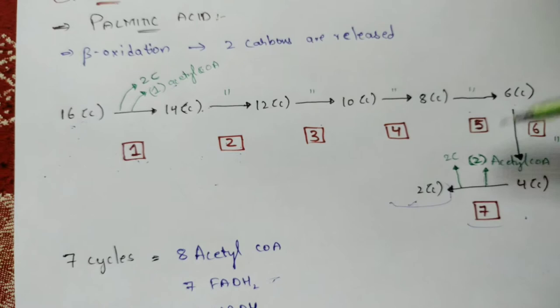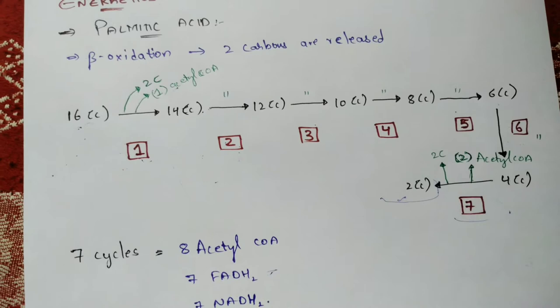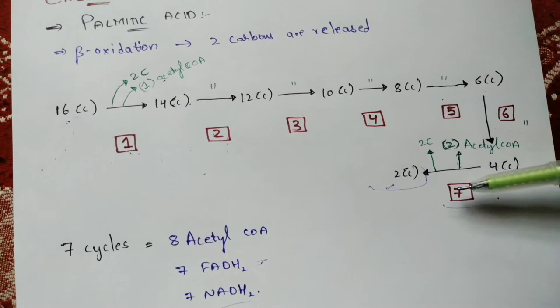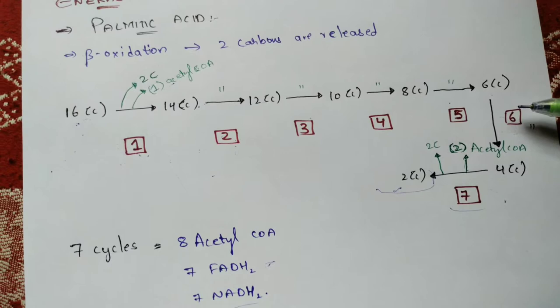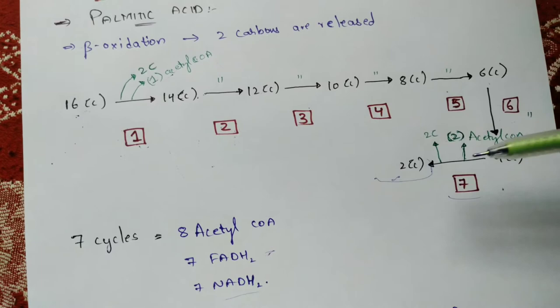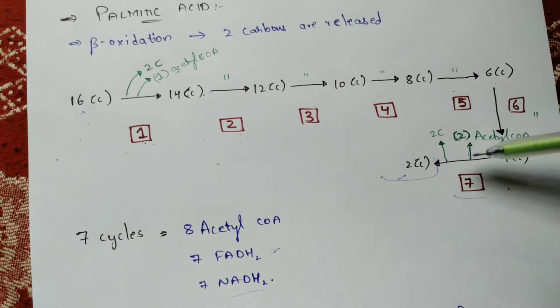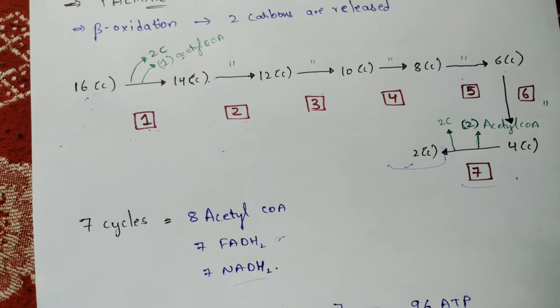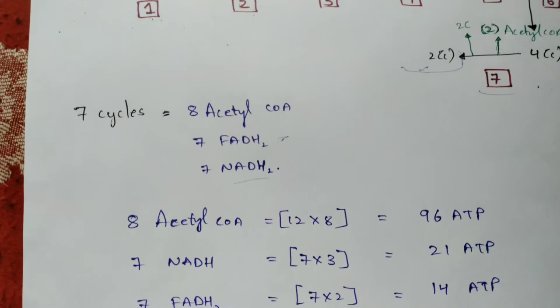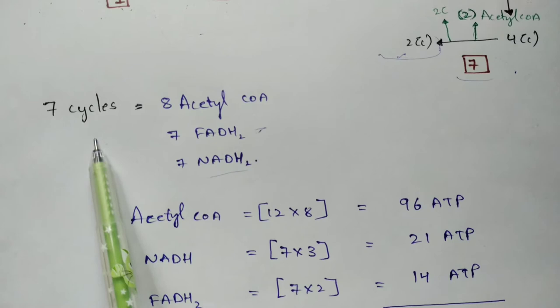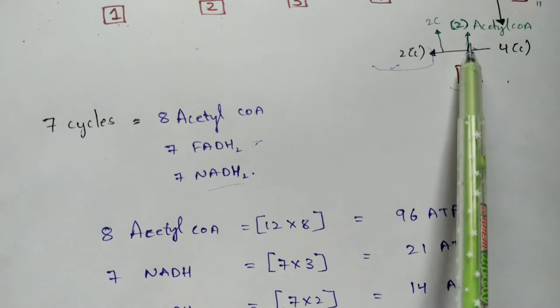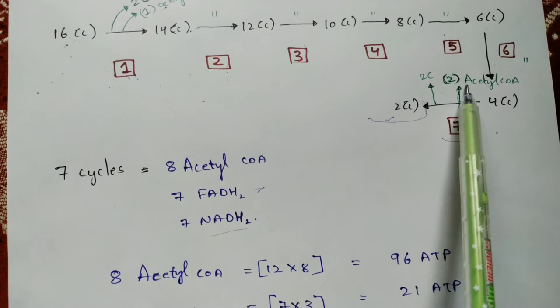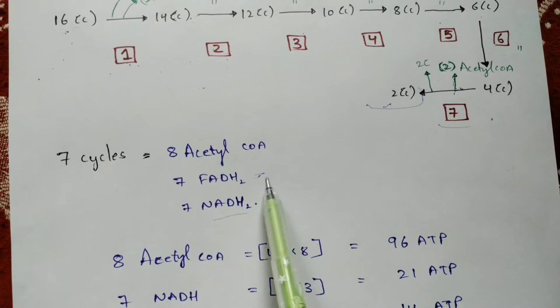An important point to remember: in the seventh and final step, two molecules of acetyl-CoA are released instead of one. So in steps one through six, only one acetyl-CoA is released per step, along with one FADH₂ and one NADH. In the seventh step, two acetyl-CoA molecules are released. In total, seven cycles produce eight acetyl-CoA, seven FADH₂, and seven NADH molecules.